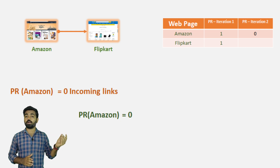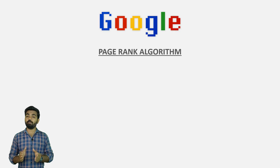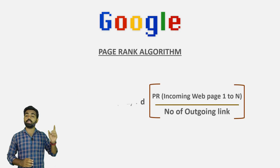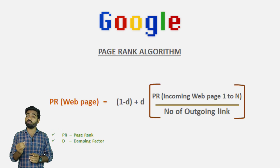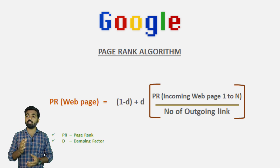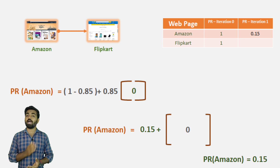So if we apply the formula, we can use the PageRank of Amazon, and it will give you zero. So if you have the PageRank, it will give you zero. So it will give you the damping factor. Now we can use the damping factor. If you use the damping factor, we can use values between zero and one. We can use any random number. For example, we can use 0.85.